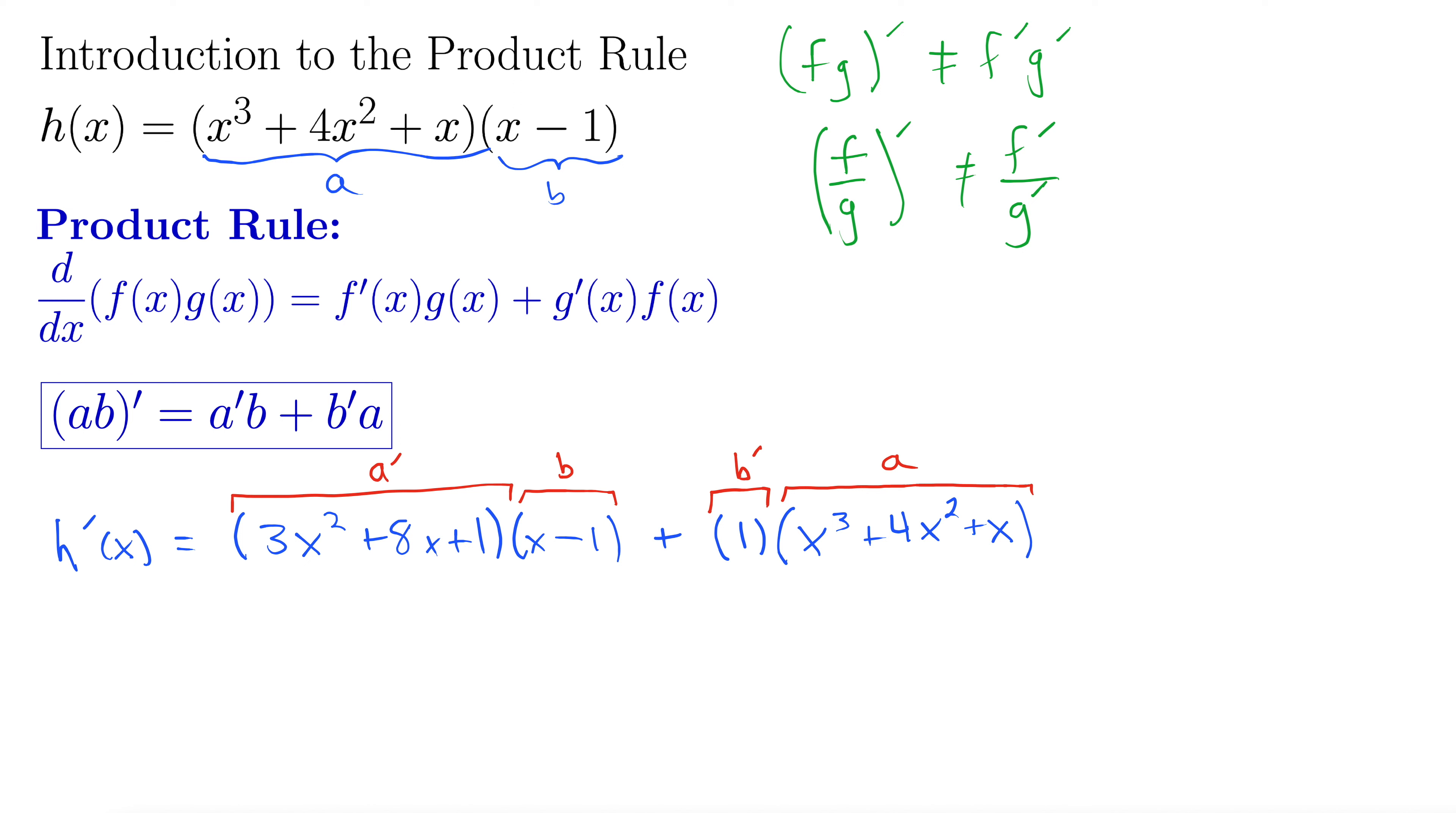And now it's just algebra from here. Let's expand these and combine terms and simplify. So I'm going to distribute this (x - 1) to each of these terms. So doing the x first, that gives us 3x³ plus 8x² plus x.